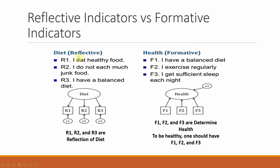Here is a final example. If we measure diet through items like 'I eat healthy food,' 'I do not eat much junk food,' and 'I have a balanced diet,' these are reflective indicators — even if we remove one, the others can cover it. However, if health is formative — measured by 'I have a balanced diet,' 'I exercise regularly,' and 'I get sufficient sleep each night' — then F1, F2, and F3 are determining health. To be healthy, one should have all three; removing 'balanced diet' means the person is no longer considered fully healthy. This is how you differentiate between reflective and formative indicators.